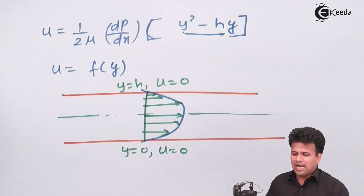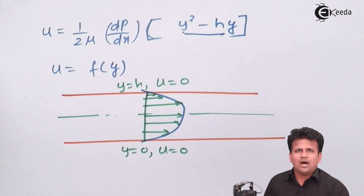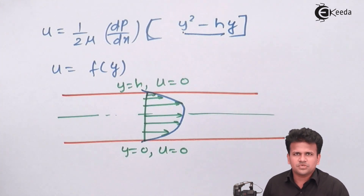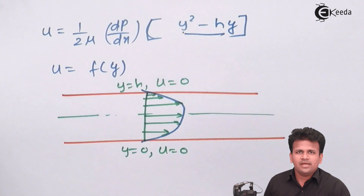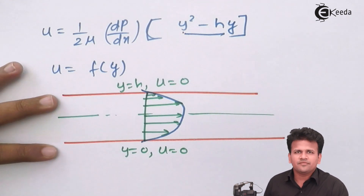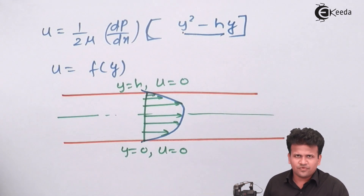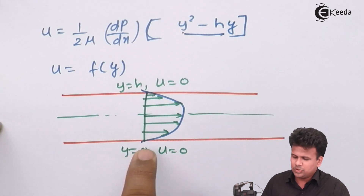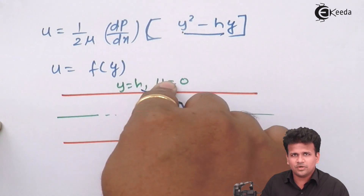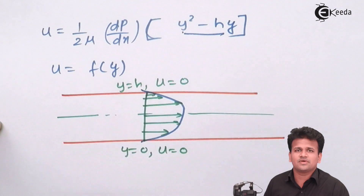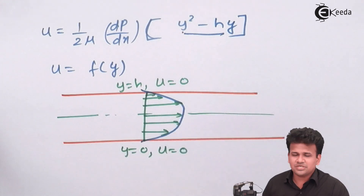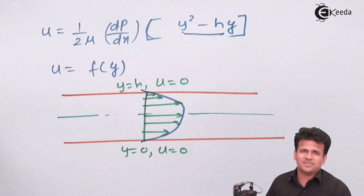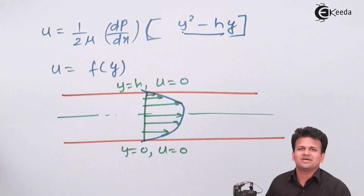I hope you have understood how to use the solution of the Navier-Stokes equation and apply it for a pipe flow in which fluid is flowing. For pipe flow, the velocity is zero at the top and bottom surfaces and maximum at the center. Thank you.